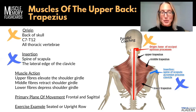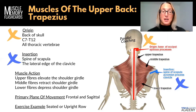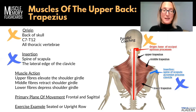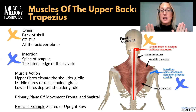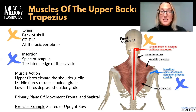The trapezius can also move in two planes of motion: the frontal plane and the sagittal plane. Retraction of the shoulder blade happens in the sagittal plane, whereas elevation and depression happen in the frontal plane — we can remember that because we're viewing those movements from the front.